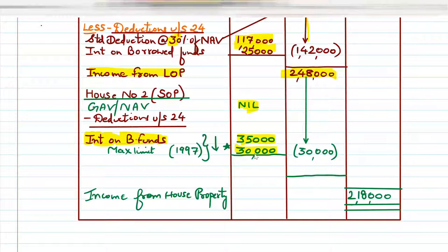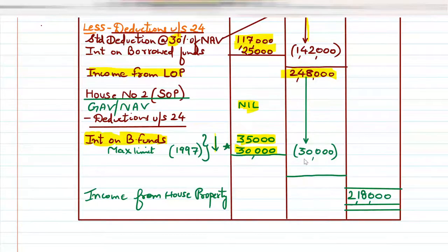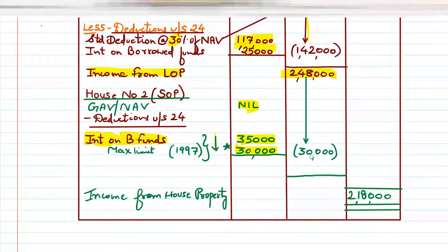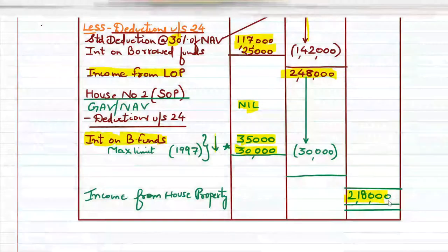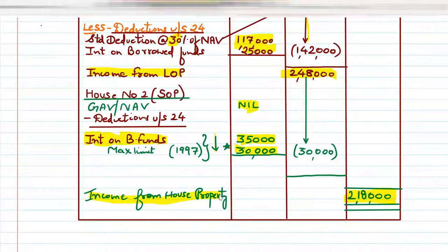Students often make the mistake of subtracting ₹30,000 from ₹35,000 and writing ₹5,000 outside. The SOP answer is always negative — so SOP is negative ₹30,000. Now, ₹2,48,000 (LOP, house number one) minus ₹30,000 (house number two) gives us a final answer of ₹2,18,000, and that is our income from house property.